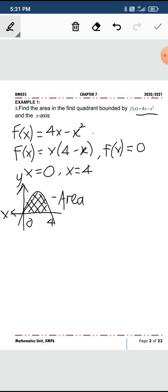A is given by your integrate, the lower limit 0 to 4, and your function is this: 4x minus x squared.